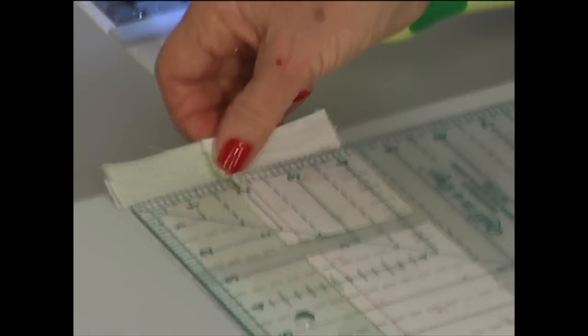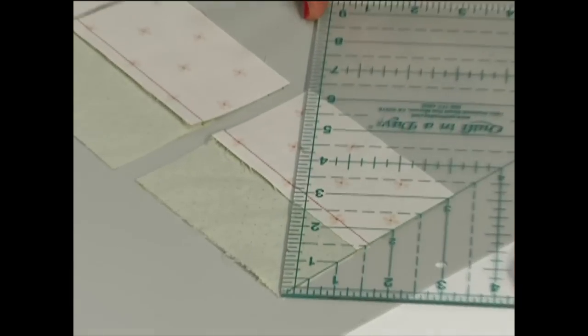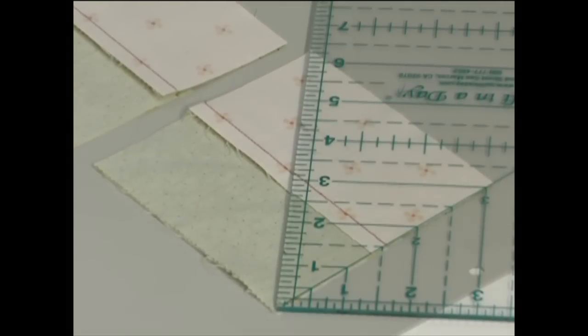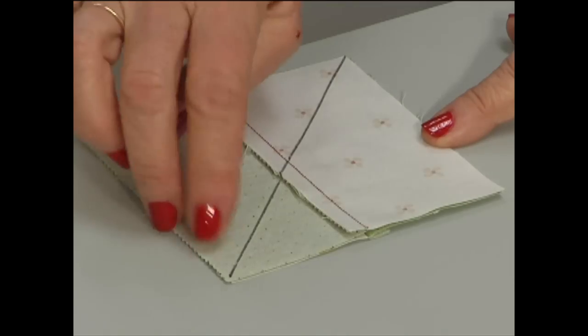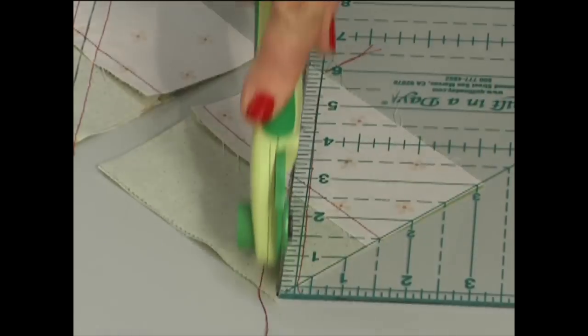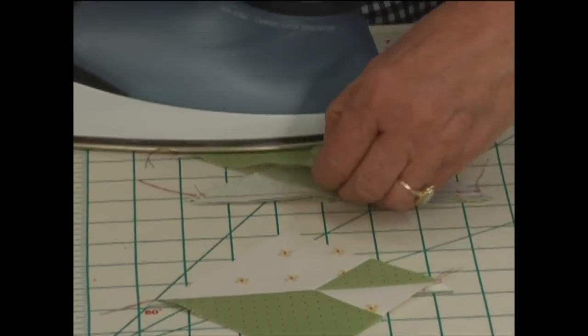Take your ruler, line up the 45 degree line along the left edge and draw a diagonal line. Sew a quarter of an inch seam, cut in half so you have two smaller pieces, and press those seams open.